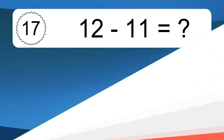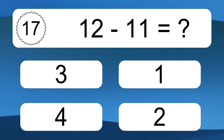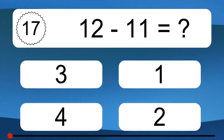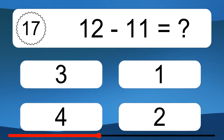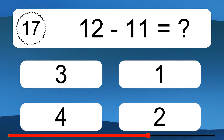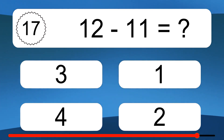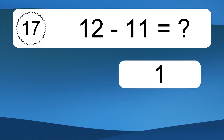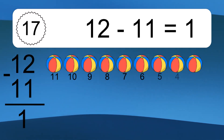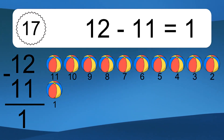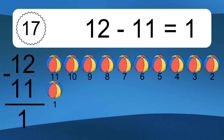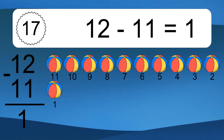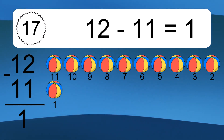12 minus 11 equals what? 12 minus 11 equals 1. Let's count it: 11, 10, 9, 8, 7, 6, 5, 4, 3, 2, 1.